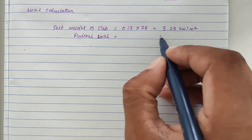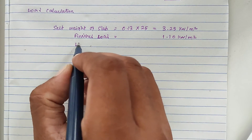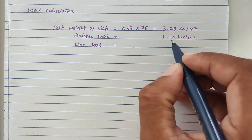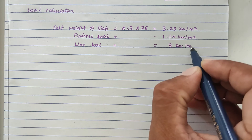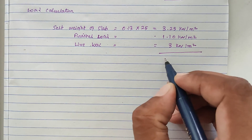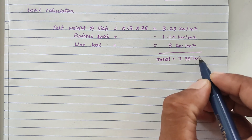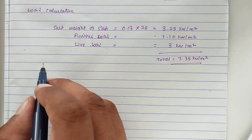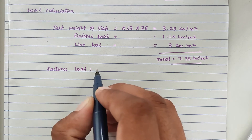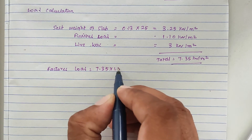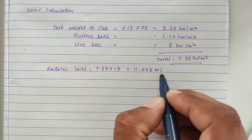The live load given is 3 kilo Newton per meter square. The total load comes to 7.35 kilo Newton per meter square. The factored load is 7.35 multiplied by 1.5, giving us 11.025 kilo Newton per meter square.